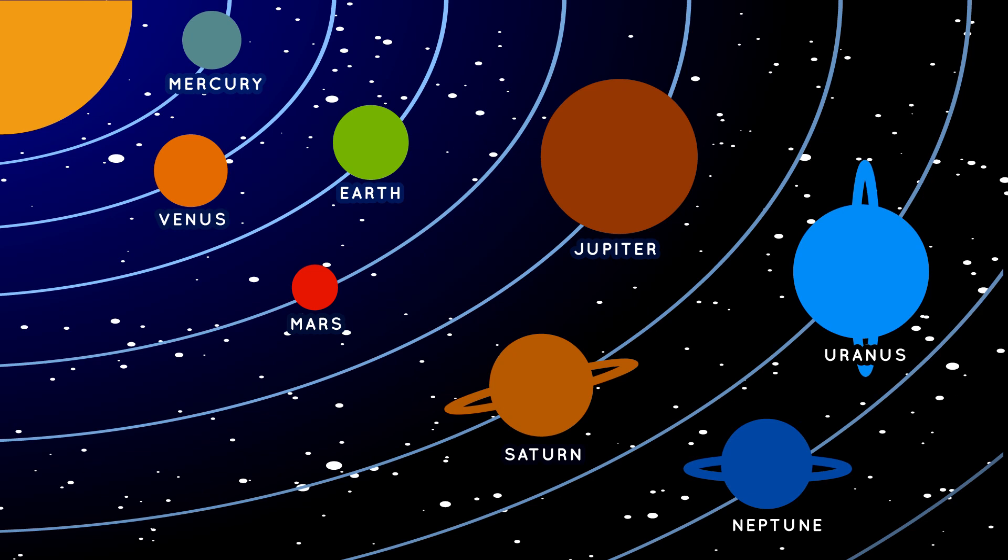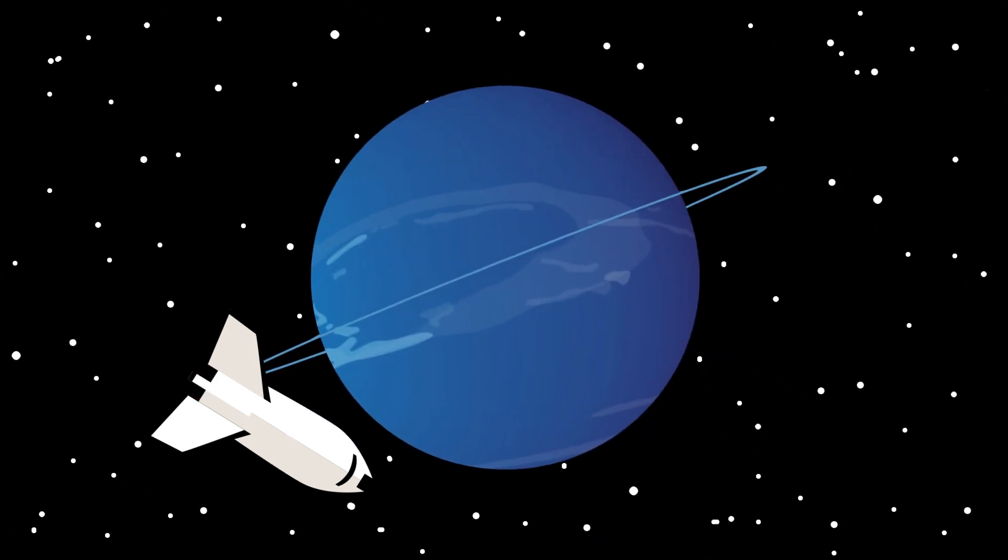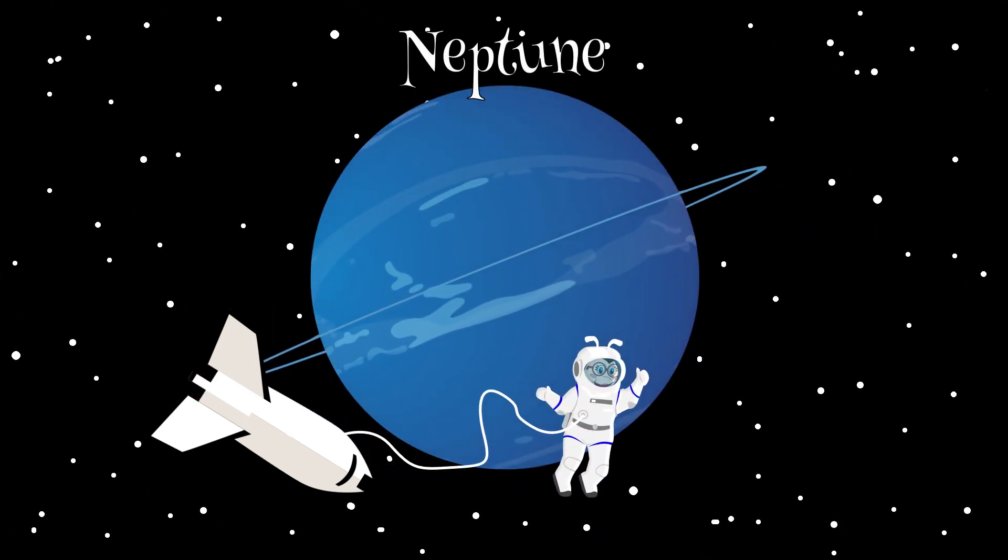Neptune is the eighth planet from the sun. Neptune is a very large, cold planet. It has six rings, but they're very hard to see, even with a telescope.